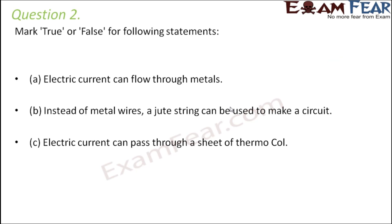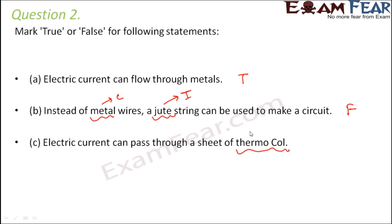Question number two — Mark true or false. Electric current can flow through metals: True, because metals are good conductors of electricity. Instead of metal wires, a jute string can be used to make a circuit: False, because jute is an insulator and does not allow current to pass through it. Electric current can pass through a sheet of thermocol: False, because thermocol is also an insulator.